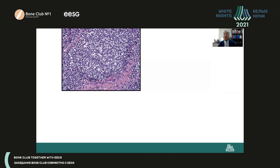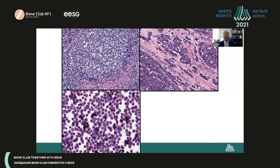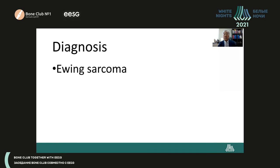Cytologically, several variants are seen: cells arranged in lobular and cord-like patterns, and the individual tumor cells show round nuclei with a fine chromatin pattern. The diagnosis is Ewing's sarcoma. NKX2.2 is a very good immunohistochemical marker for this entity. I will not go into further depth here, as the following speakers will discuss Ewing's sarcoma in detail.